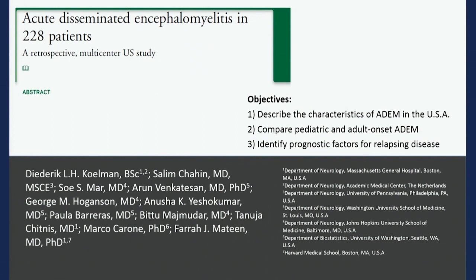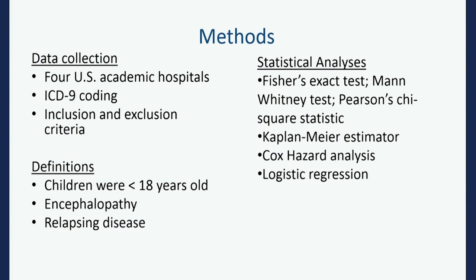This paper was published a couple of years back — a collaborative effort among four centers: the Boston centers, University of Pennsylvania, Johns Hopkins University, and Washington University. These are all referral centers for neuroimmunological conditions. A US cohort was notably missing from prior literature — a lot of the really good work has come out of Europe and Canada. We wanted to see what's going on in the US and compare pediatric and adult onset ADEM.